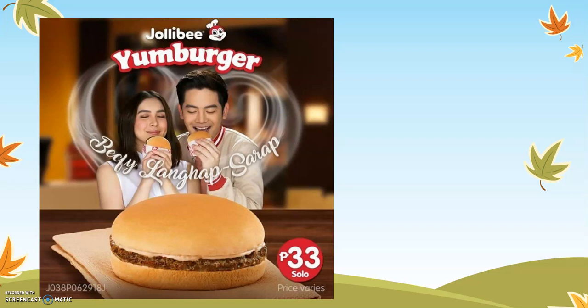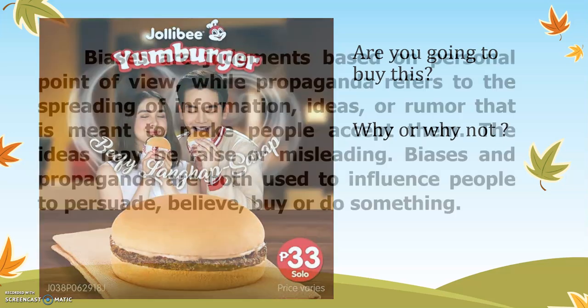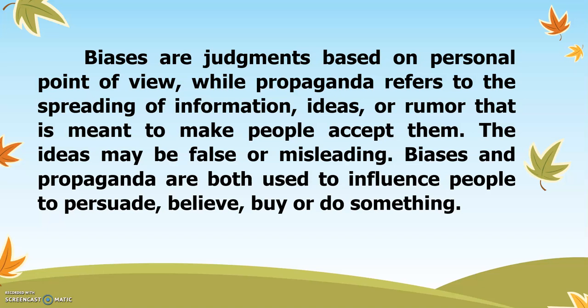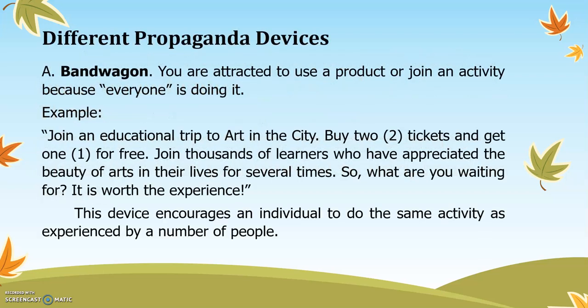Look at this picture — it seems very yummy, right? Are you going to buy this? Remember, biases are judgments based on personal point of view, while propaganda refers to the spreading of information, ideas, or rumors meant to make people accept them — the ideas may be false or misleading. Both are used to influence people. We are going to study the different propaganda devices, starting with the bandwagon.